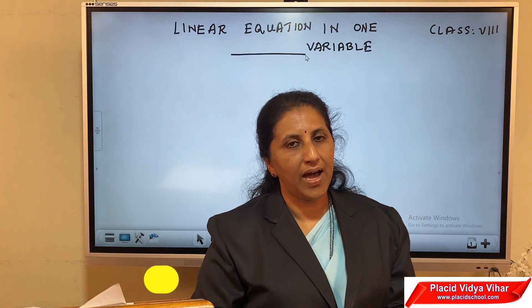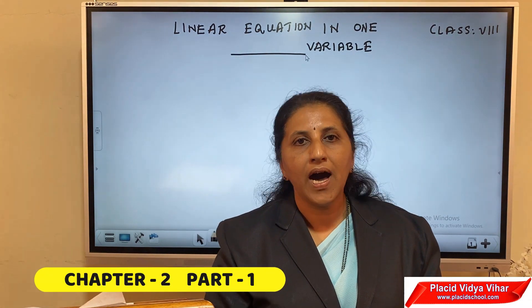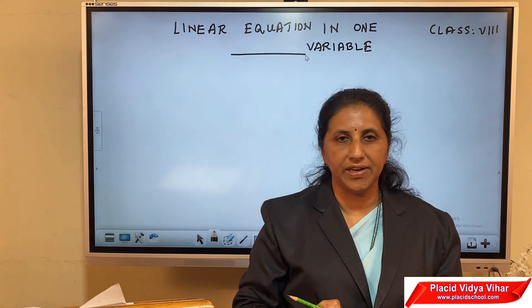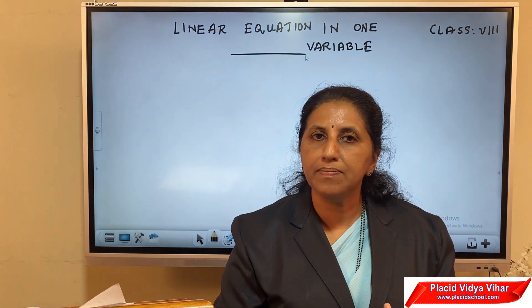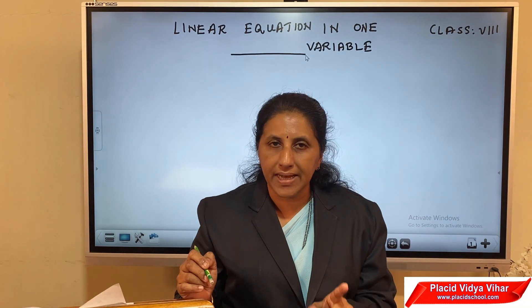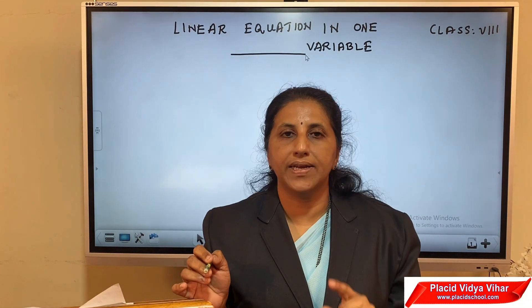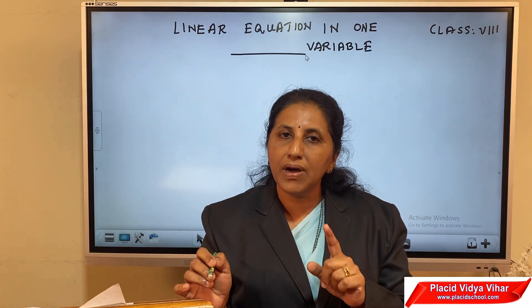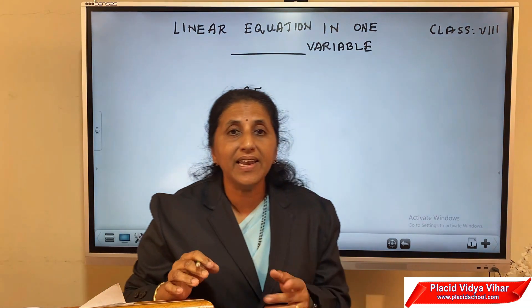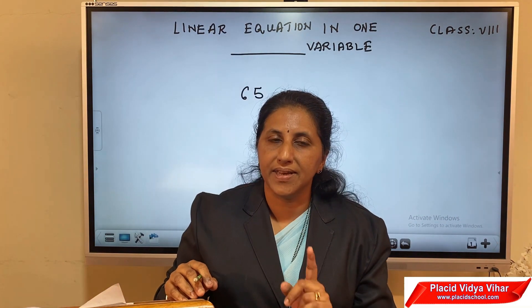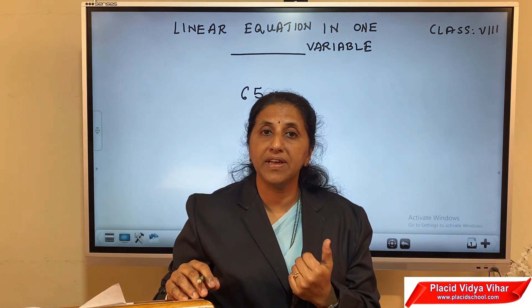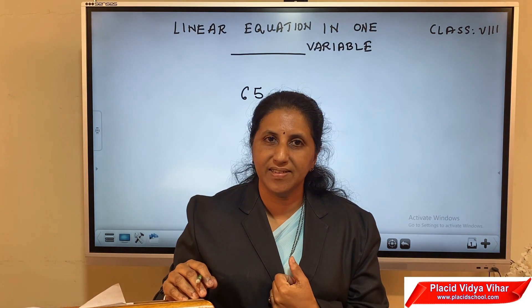There are two friends Anu and Manu. Anu asked Manu to think a number, then she continued: multiply the number by 4, and add 5 to the number. Then she asked, what is the answer you got? Manu replied, the answer is 65. Suddenly Anu said, the number in your mind is 15. Manu was surprised how she got the answer.